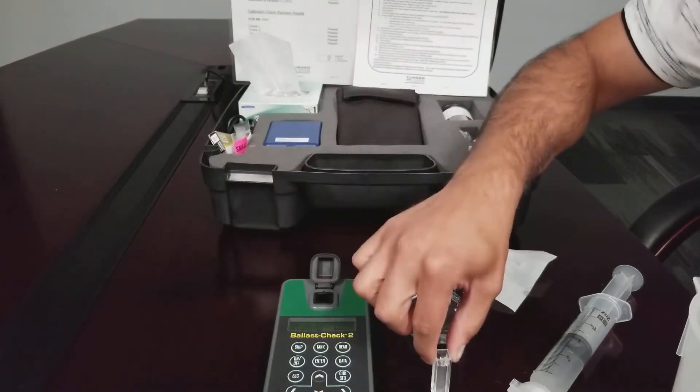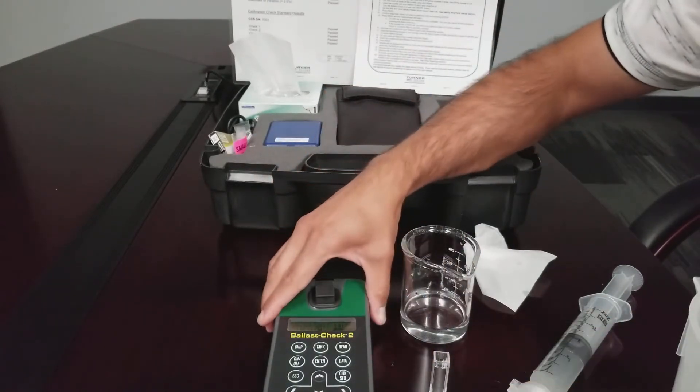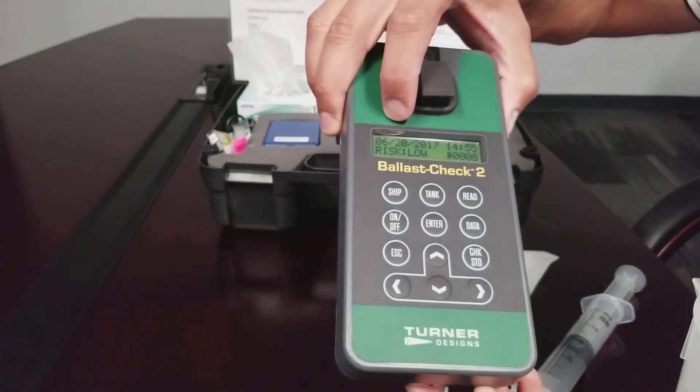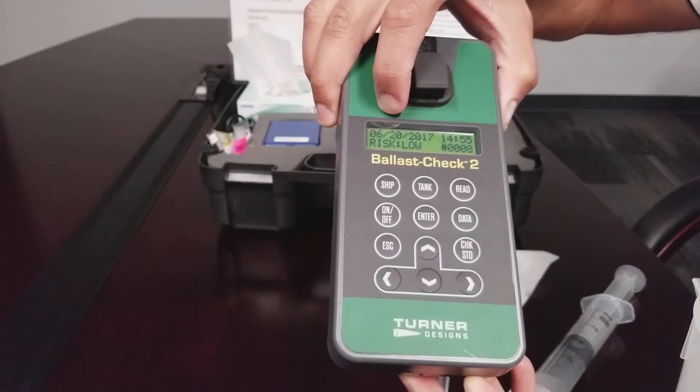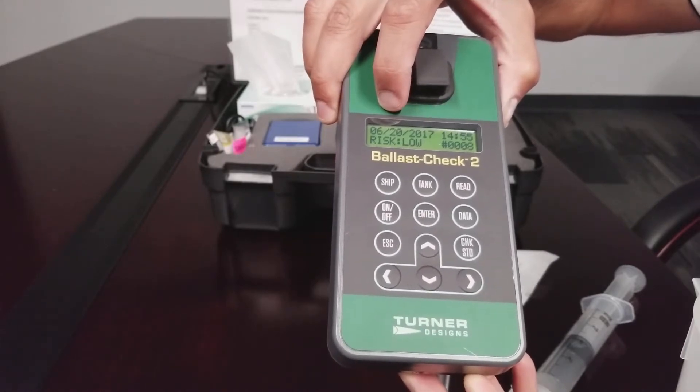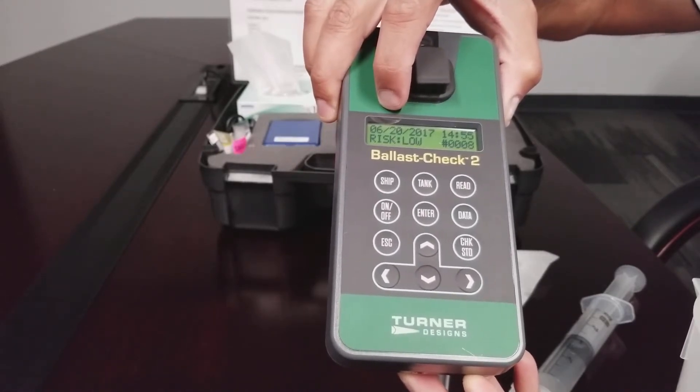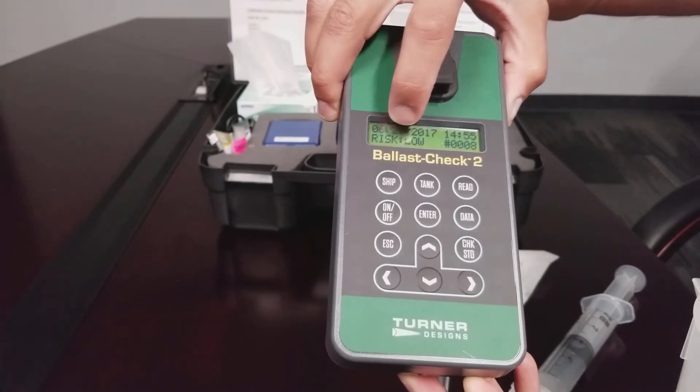Remove the cuvette from the sample compartment. Results will be displayed on the screen and logged to memory to be downloaded at a later time. Risk and indication of exceeding the discharge standards is displayed on the screen as low or high. In this case, risk is low.